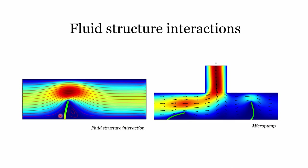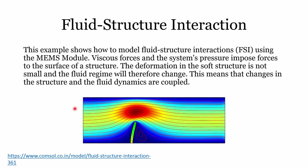There is also a structure used to obstruct fluid flow, creating more pressure. This requires a moving mesh ALE technique to model such deformation, because as time progresses the structure bends and the mesh needs to be updated accordingly.